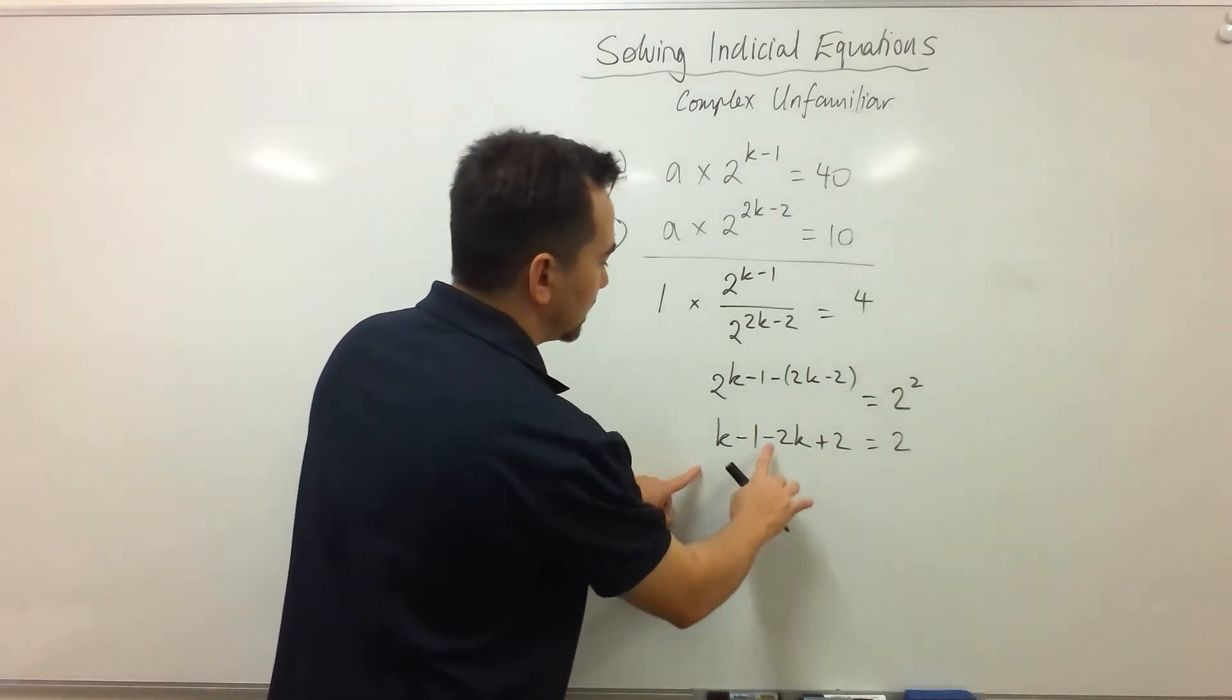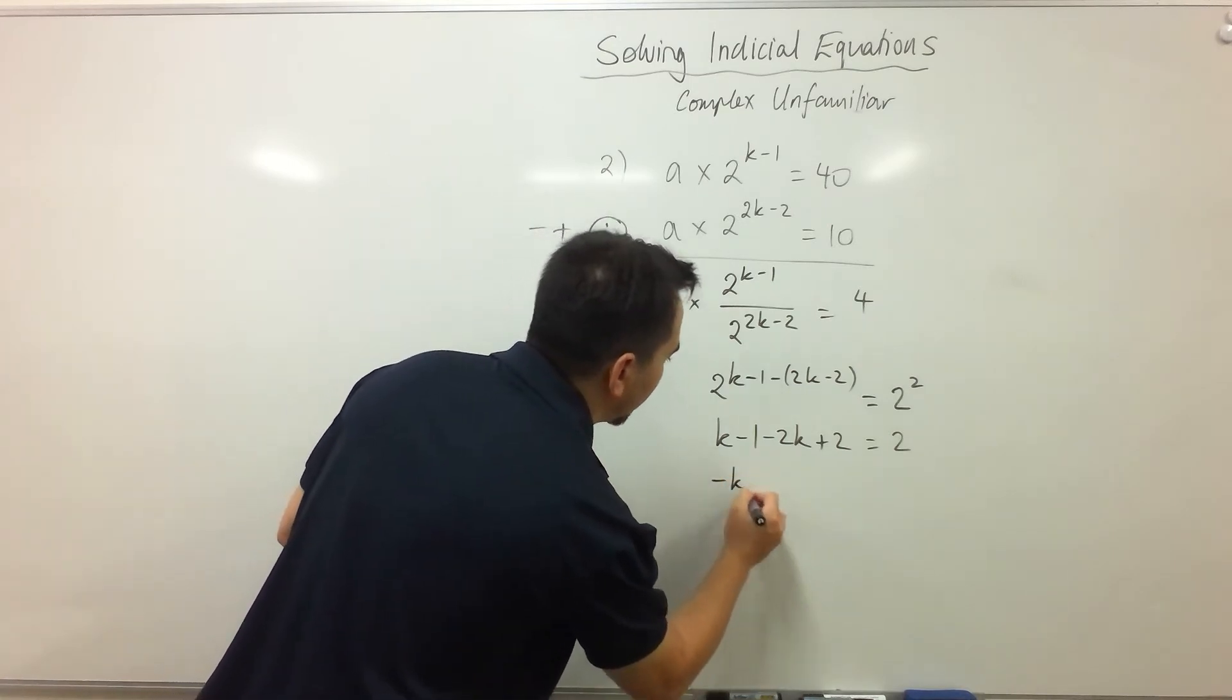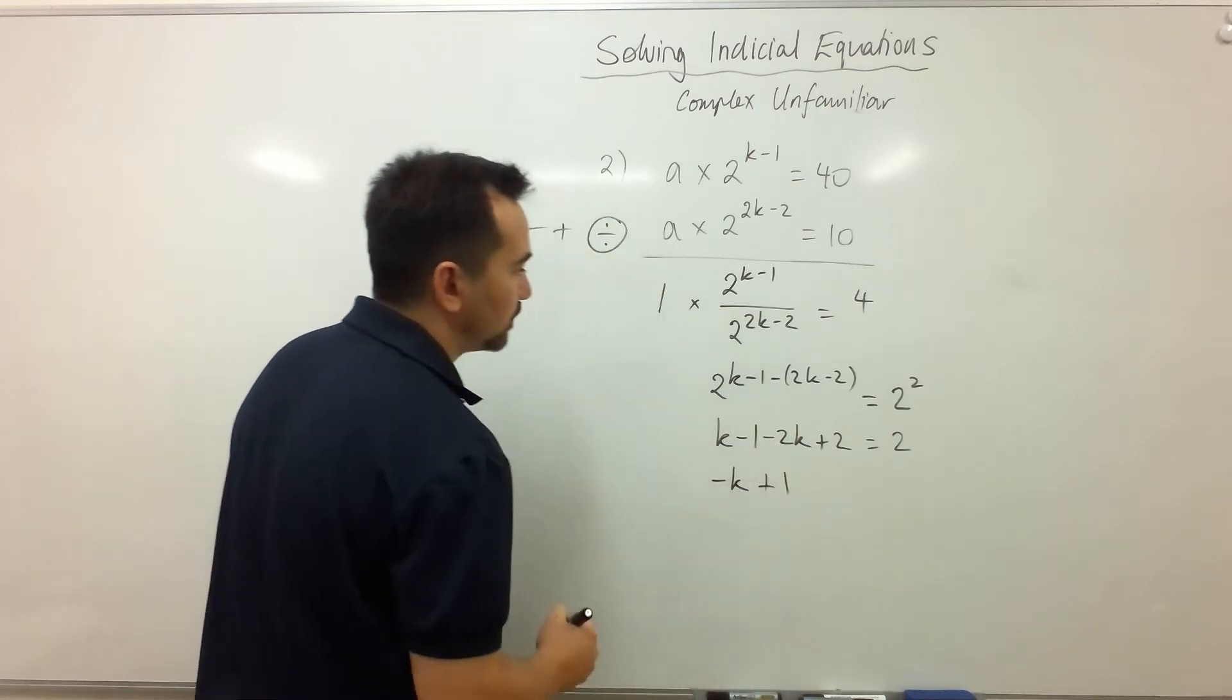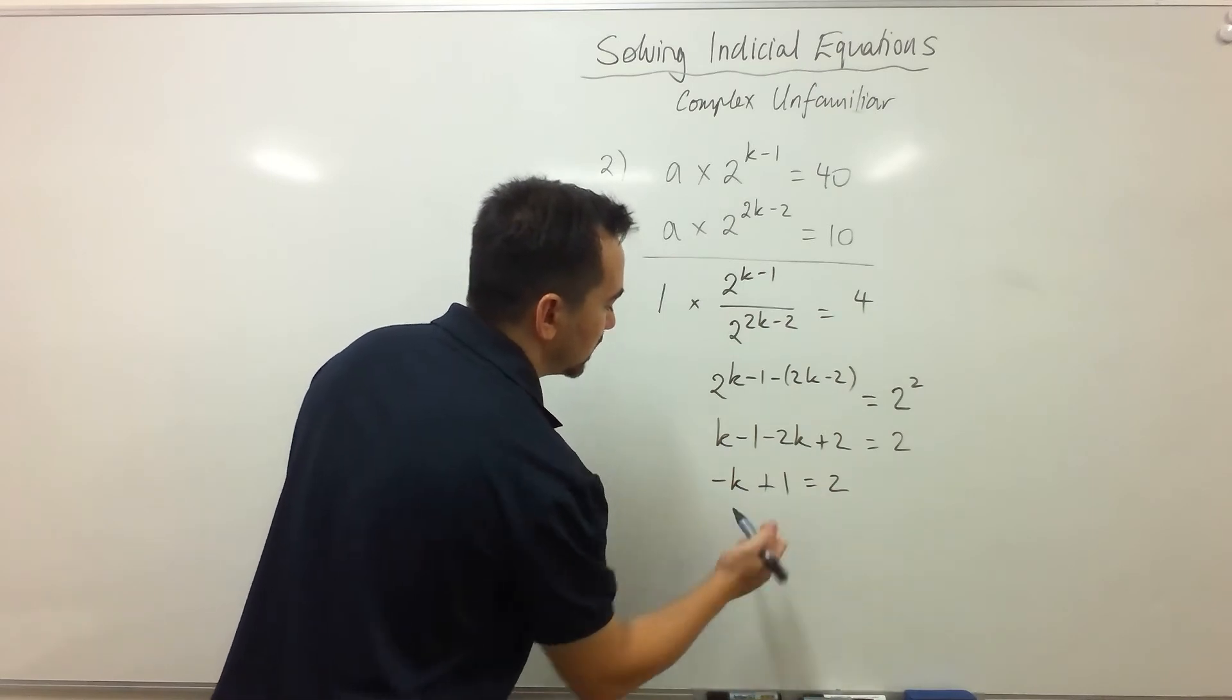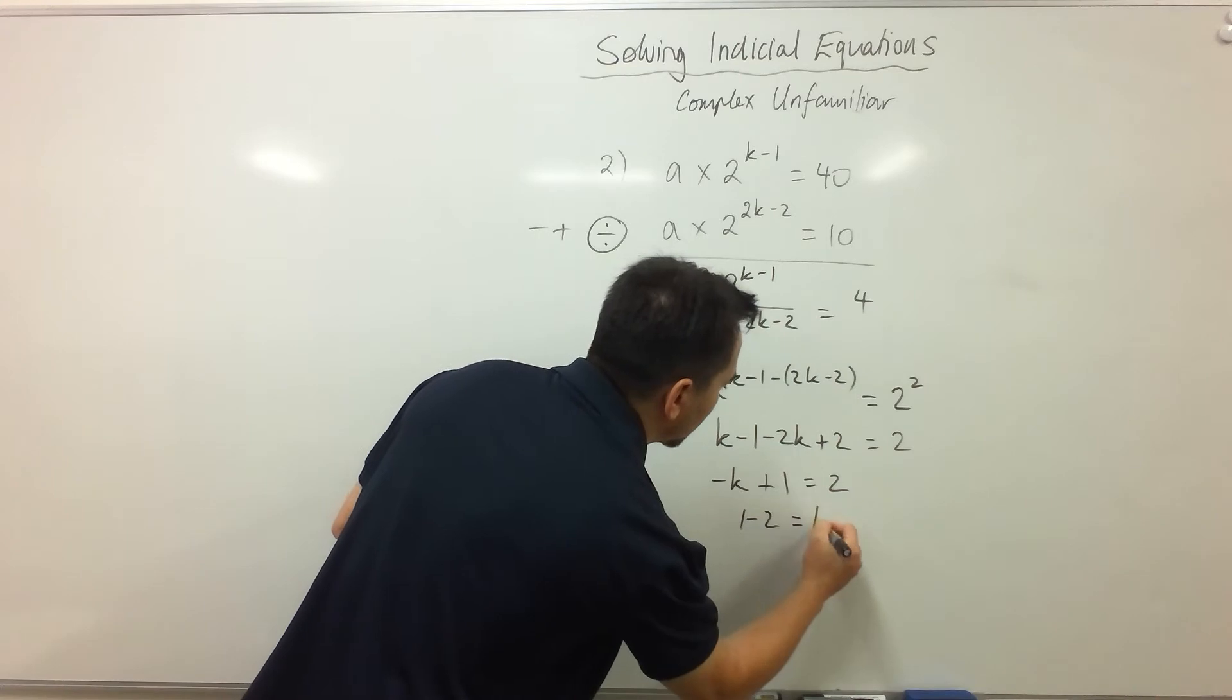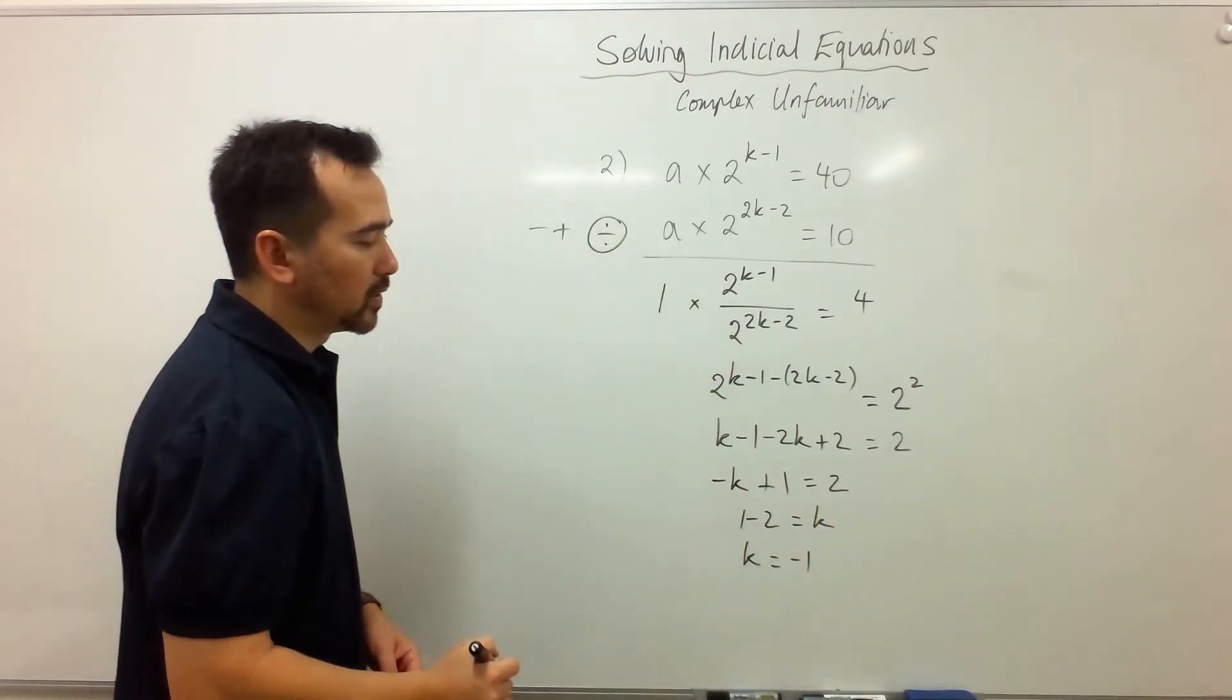Now k take away 2k is equal to negative k. Negative 1 plus 2 is positive 1, and that's equal to 2. When I move the k to this side and 2 to this side, I get 1 take away 2 which is equal to positive k, and so k is equal to negative 1.